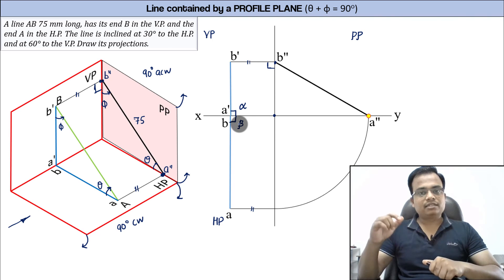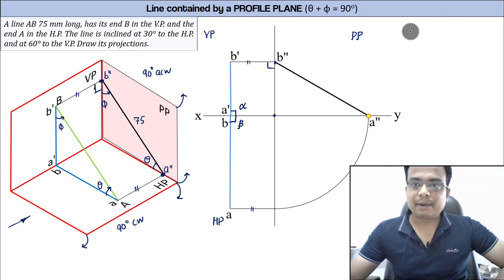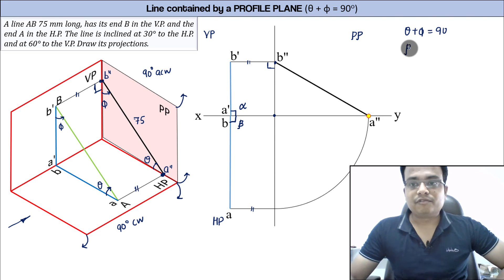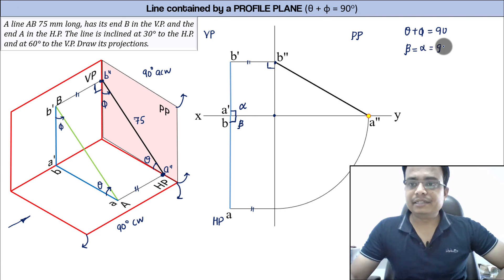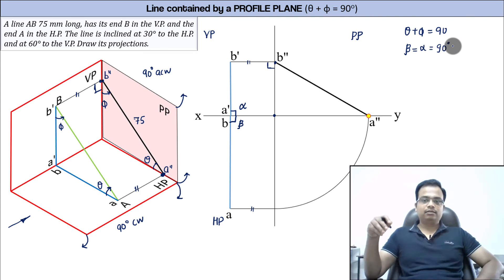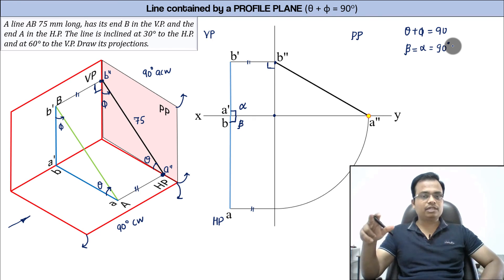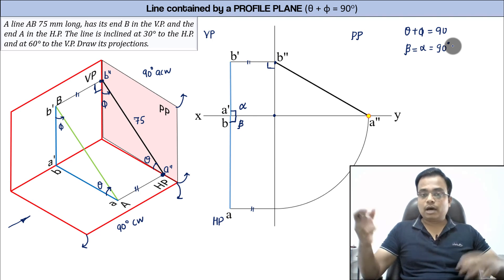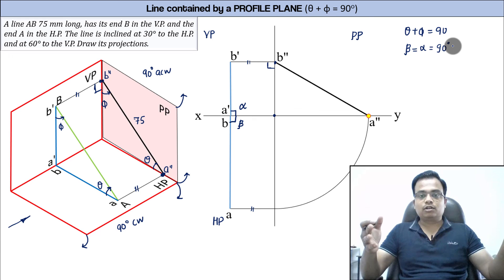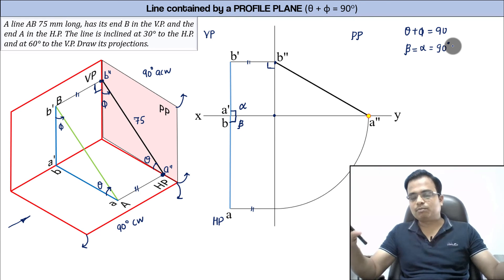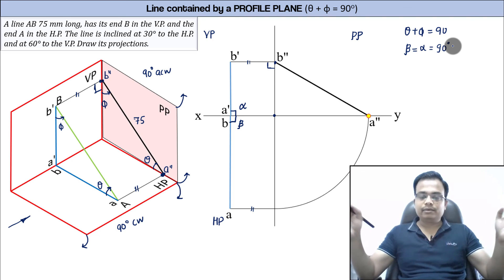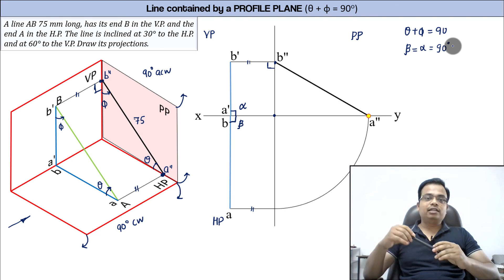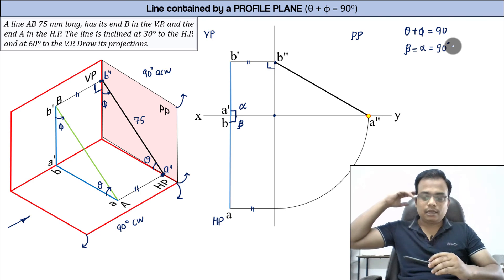This confirms that alpha equals 90 degrees and beta equals 90 degrees. To summarize: whenever a line is contained by a profile plane, theta plus phi equals 90 degrees, and the front view and top view both make an angle of 90 degrees with the XY line. This is a very special and important case for competitive examinations. After watching this video, try making it on paper — it'll take only five to ten minutes. Thanks, take care, and keep learning!